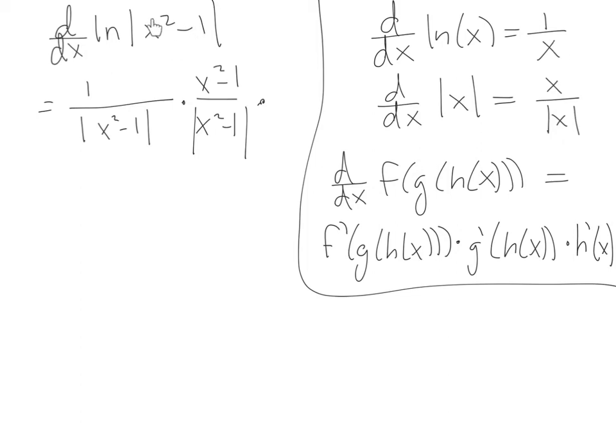And then I've got one more layer to deal with. In here I've got x squared minus 1, so I have to take the derivative of x squared minus 1, which is just 2x. Finished the calculus, now it's just a matter of pushing numbers around. So I'm going to clean this up a little bit.